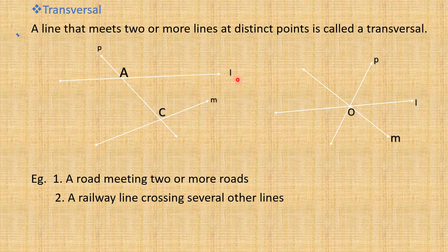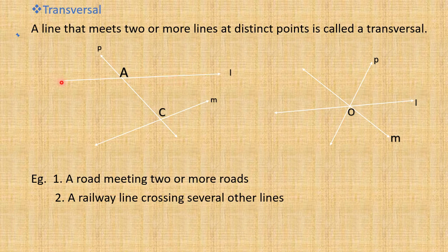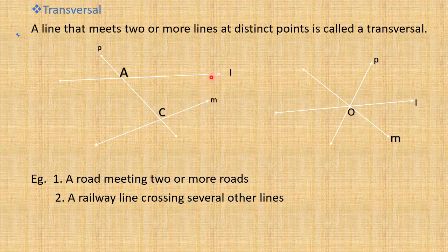What about line L? Is it meeting two other lines? Line L — see, it is drawn here. A line actually has infinite length. Still, in the figure you can see this line L cuts only line P; it does not cut line M. So it is cutting only one line. So it is not a transversal. Similarly, in the case of M also, it only meets one line P and does not meet line L. So M is also not a transversal.